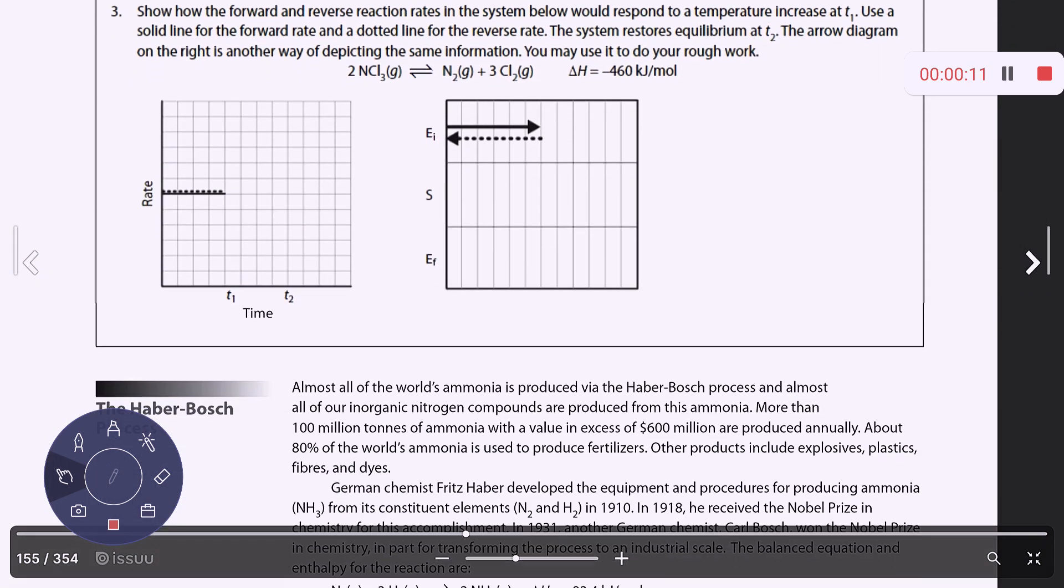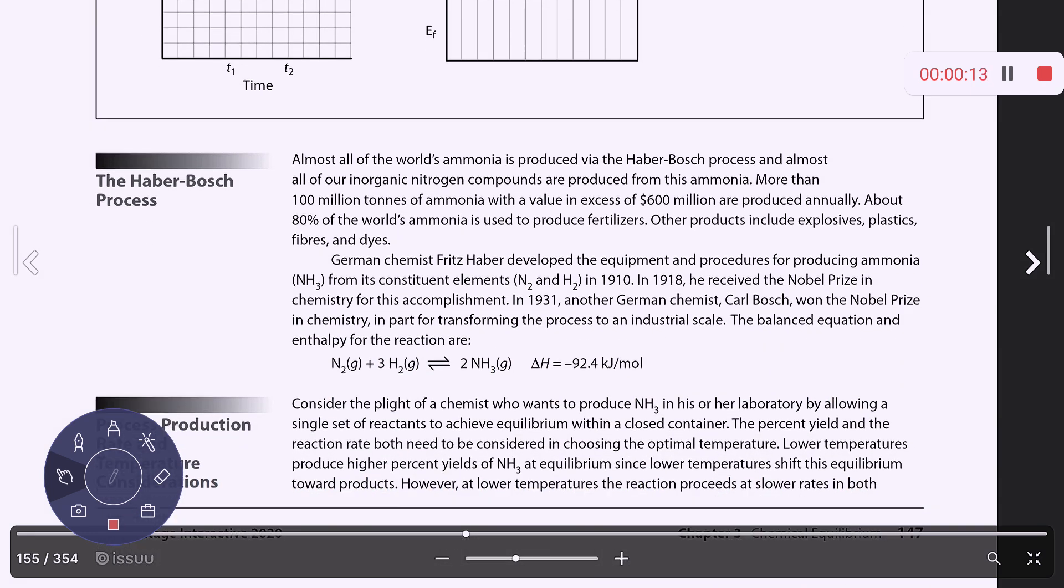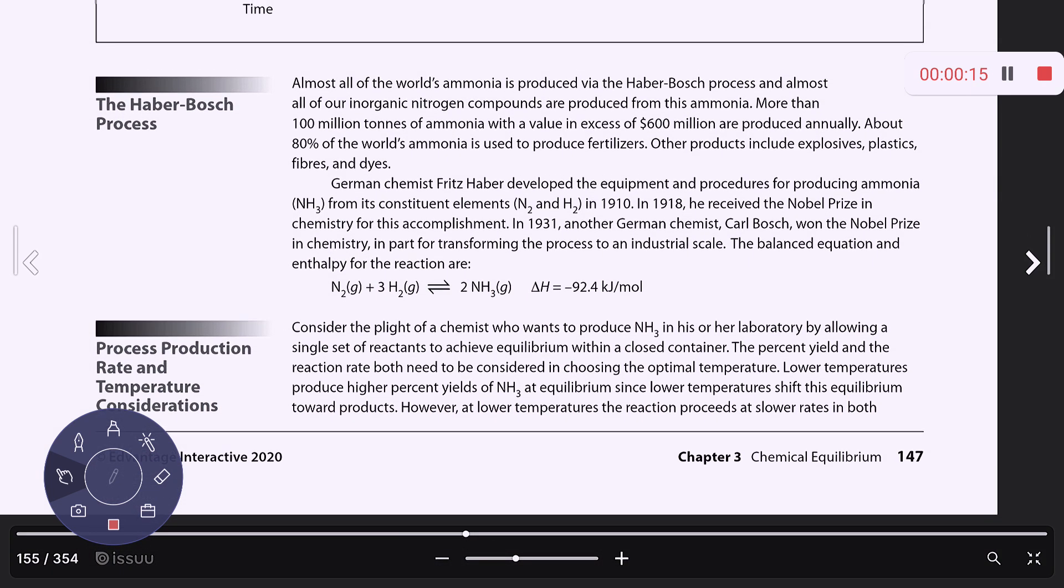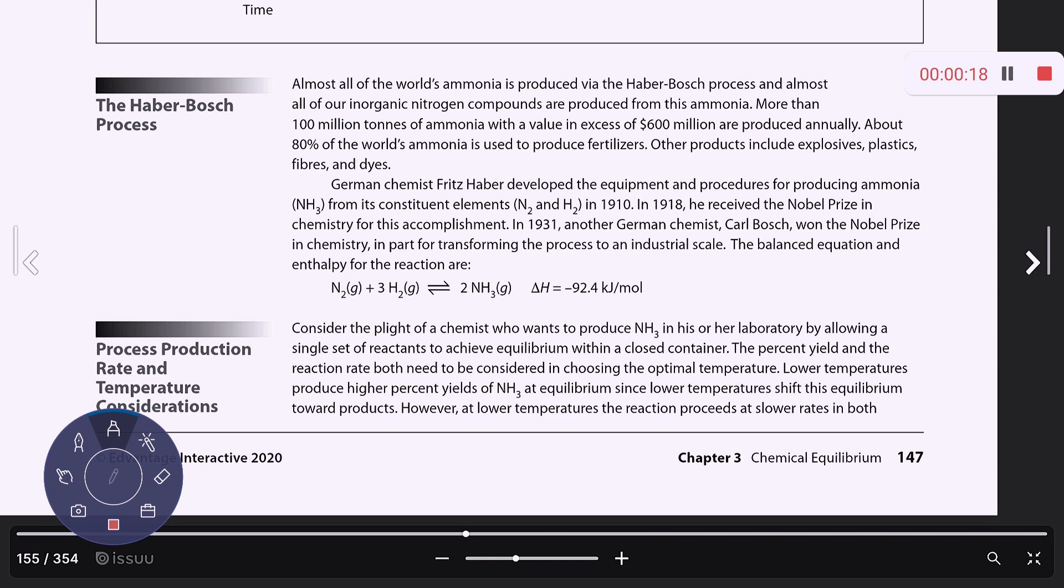Fritz Haber developed the equipment and procedures for making ammonia from nitrogen and hydrogen gas in the early 1900s, and received a Nobel Prize in chemistry for it. Carl Bosch won the Nobel Prize in chemistry as well for transforming this chemical reaction into something that could be made on an industrial scale.